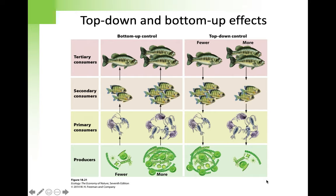But the sea otter recovery was spotty. They had completely recovered from the fur trade at a number of island systems across the Aleutian archipelago, of which Amchitka is a part. There were other island systems where they had not yet recovered. The experiment was simple: compare ecosystems with otters to those without.